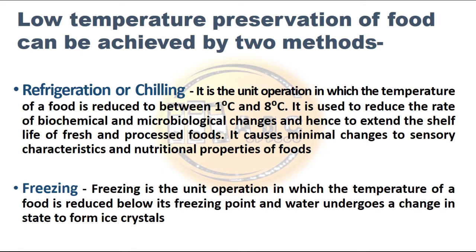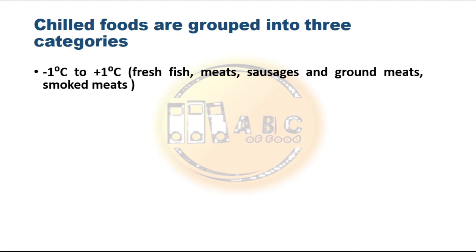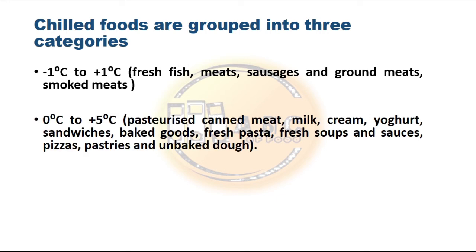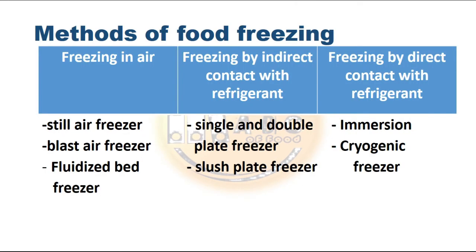The second method is freezing, a unit operation in which the temperature of a food is reduced below its freezing point and water undergoes a change in state to form ice crystals. Chill foods are grouped into three categories: the first is between -1°C and +1°C, including fresh fish, meat, sausages, ground meat, and smoked meat. The second is 0°C to +5°C, including pasteurized canned meat, milk, cream, yogurt, sandwiches, baked goods, fresh pasta, fresh soup, sausages, pizza, and unbaked dough.